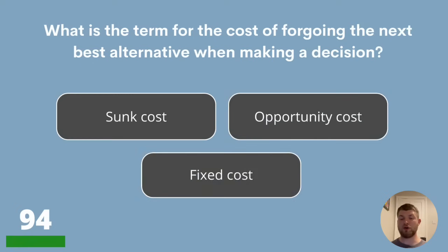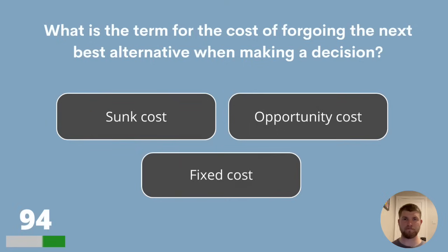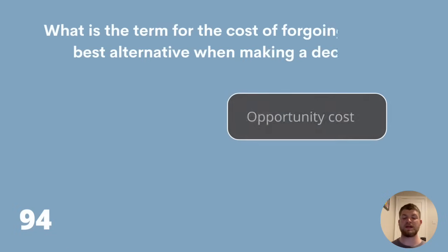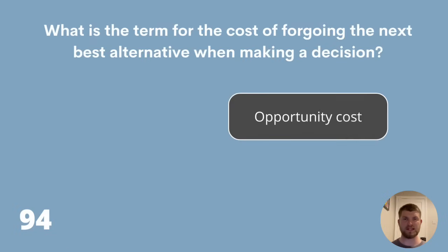Question 94. What is the term for the cost of forgoing the next best alternative when making a decision? Sunk cost, opportunity cost or fixed cost? The answer is opportunity cost.